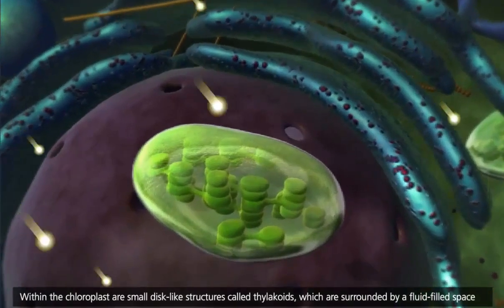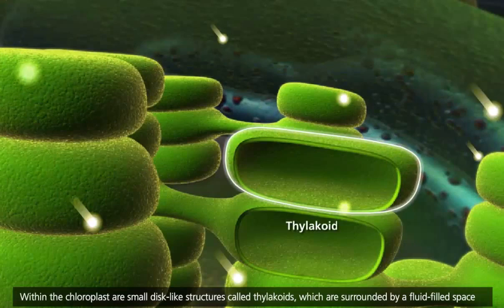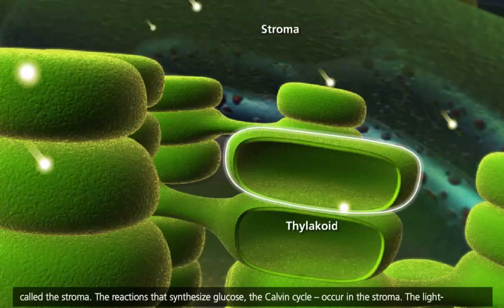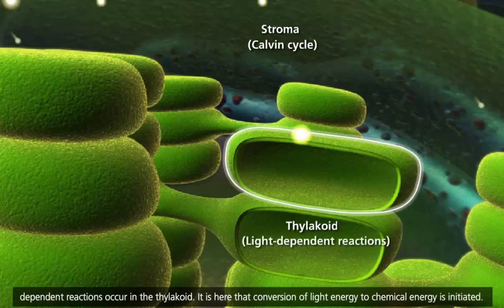Within the chloroplast are small disc-like structures called thylakoids, which are surrounded by a fluid-filled space called the stroma. The reactions that synthesize glucose, the Calvin cycle, occur in the stroma. The light-dependent reactions occur in the thylakoid.